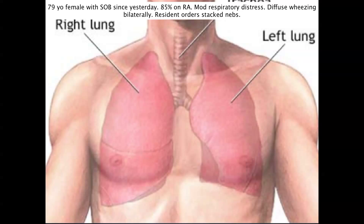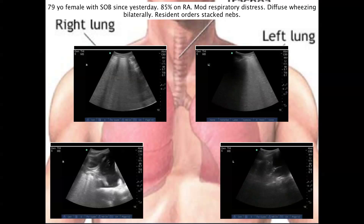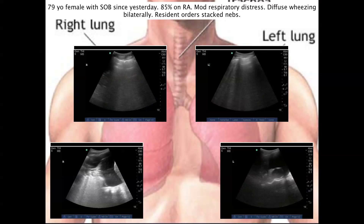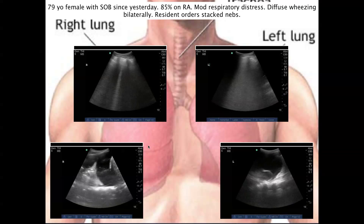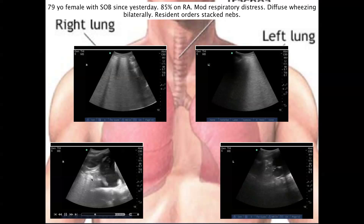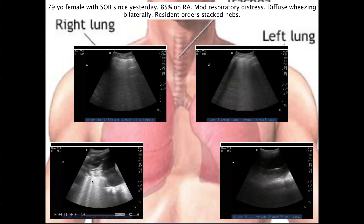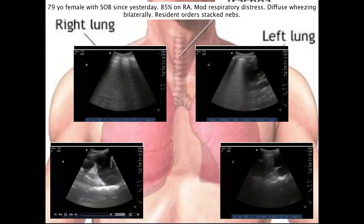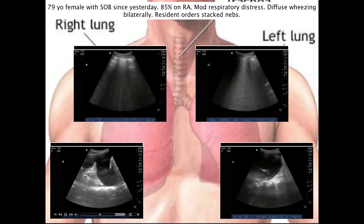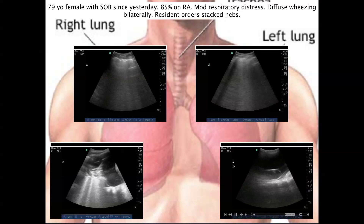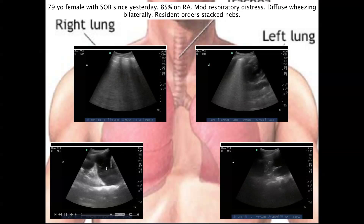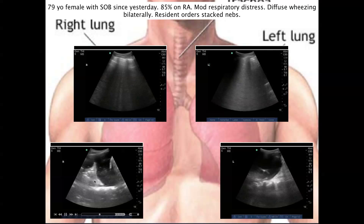A 79-year-old female came in with acute moderate respiratory distress and wheezing all over. Someone ordered nebs, then they did an ultrasound and quickly realized that the nebs aren't probably going to help. The patient has florid B-lines on both the right and the left, as well as large pleural effusions. You can see some consolidation of this lung, and these B-lines coming from the pneumonia or air bronchograms. This makes me think the patient has ARDS, paraneumonic effusions, or fluid overload with a concomitant pneumonia. This patient needs positive pressure ventilation, probably some diuresis, nitroglycerin, and maybe some antibiotics depending on the overall clinical picture.